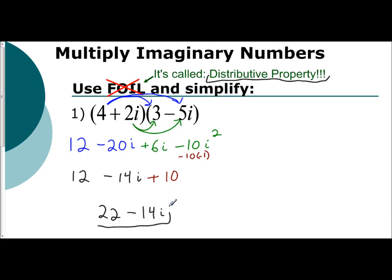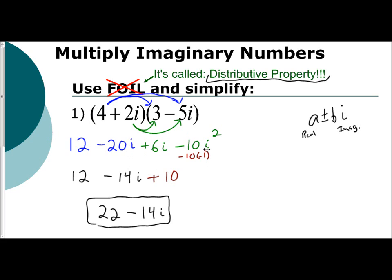Just like we did before, remember you write your answer in complex form of a plus or minus bi, where a is your real number and bi is the imaginary part. So: distribute, combine like terms as we did with the negative 20i and 6i, but remember you can't leave an exponent with the i — so i squared becomes negative 1, negative and negative gives a positive, and then combine with the real number 12.